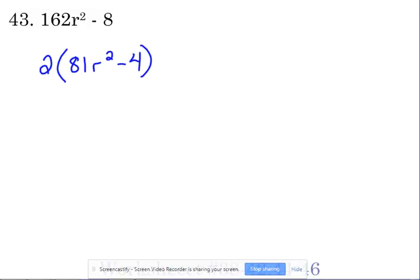81 and 4 are perfect squares. 81 and 4 are perfect squares, so we can set up our two sets of parentheses. 9 squared is 81, and that term had the variable, so it gets an R. 2 squared is 4 plus minus, we are finished.